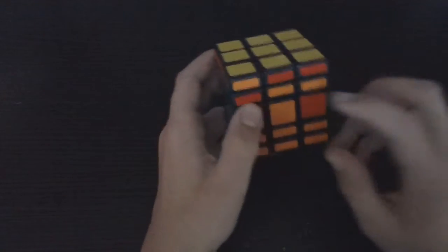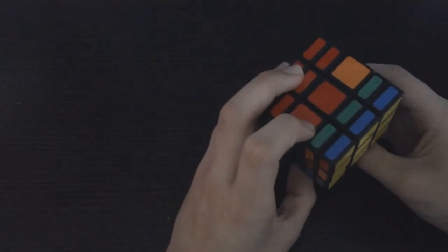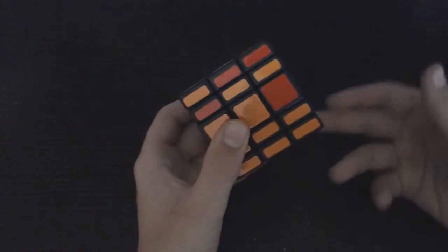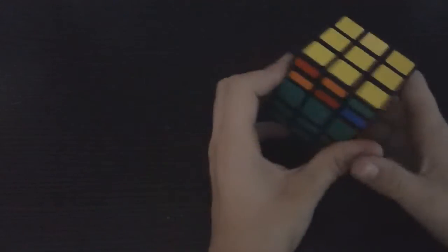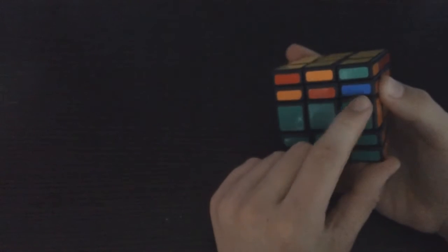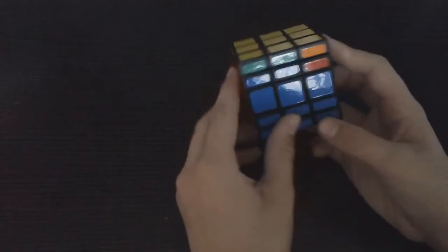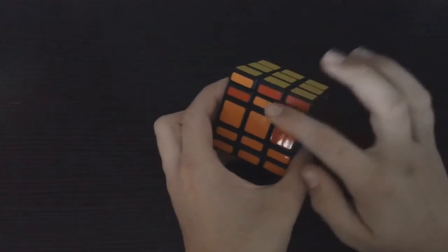So now what we're going to do is solve this layer right here. The first thing we're going to do is see if we can find any states where either the whole side is solved like this, or say this was orange, where it's orange, orange, red, or red, red, orange, or anything like that, where it's two colors and then some other color in the middle.